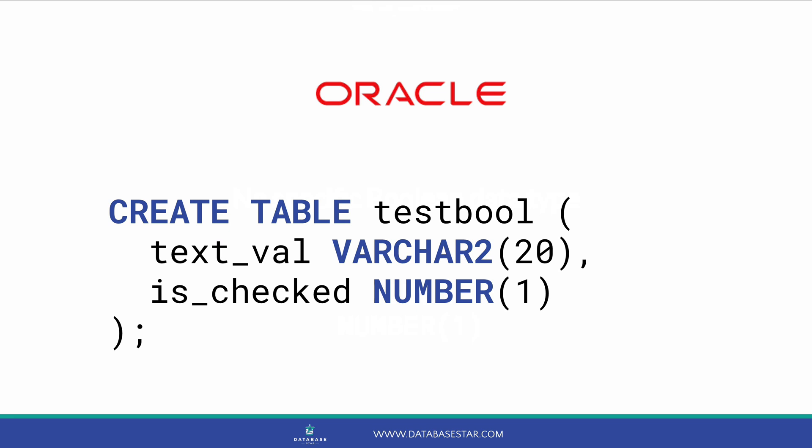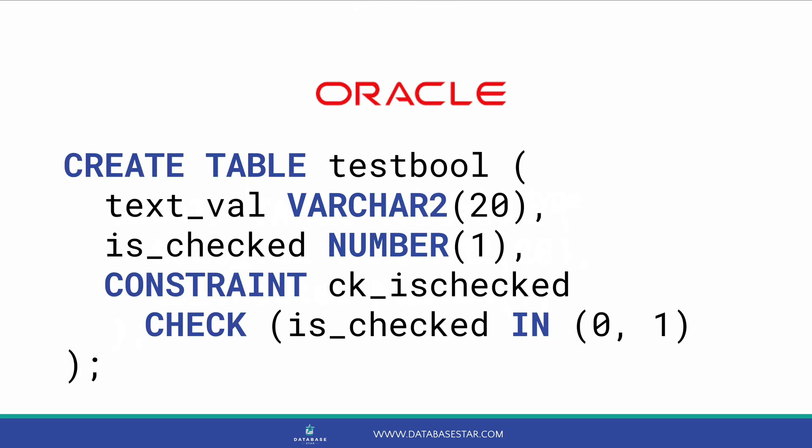We've got a table called TestBool, with a text value as the first column. Our second column is called IsChecked, and this is our Boolean. It has a data type of number with one digit, which is the number 1 inside the brackets. You can use it how it is, or you can make it even better by adding a check constraint on the column. This will ensure other values cannot be entered. The check constraint will ensure that IsChecked can only store the values of 1 or 0. This means you can't insert a value of 2, for example, which keeps our data clean.